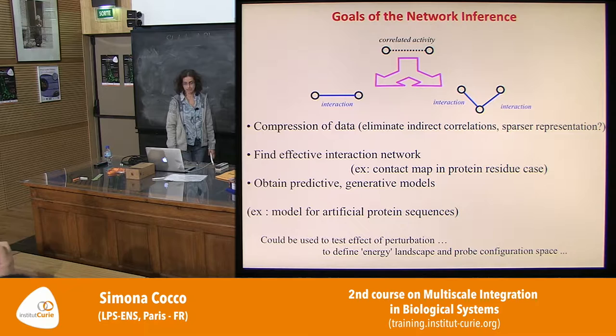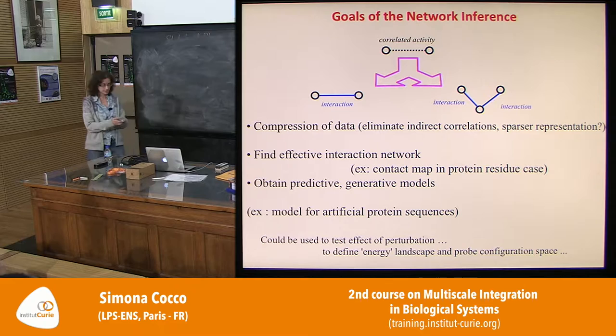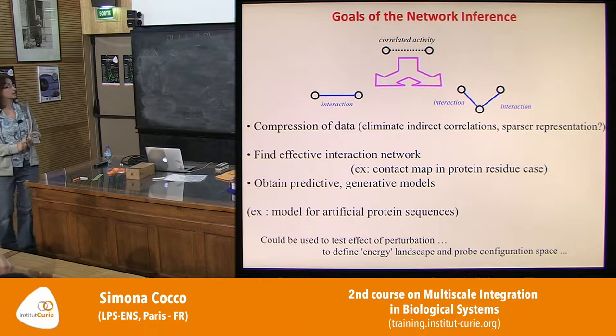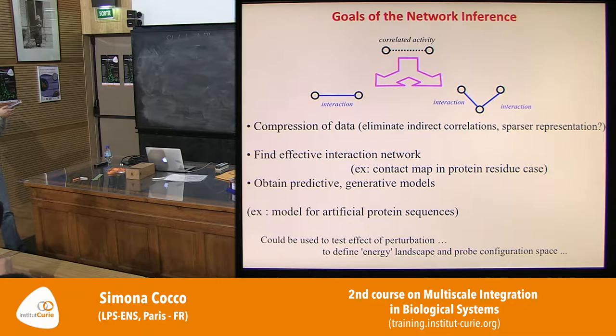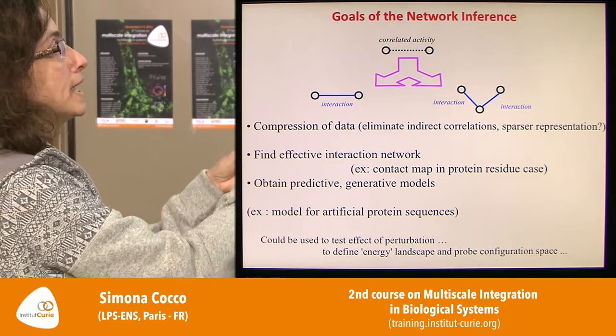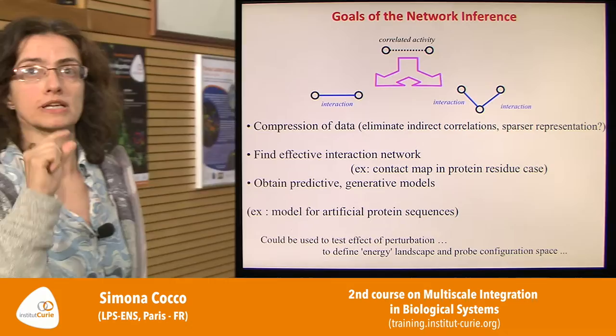Once you have removed all indirect correlations, you will have a network of interactions which, for example in the case of proteins, you can compare to the structure of the protein to see if this network is indeed correct.